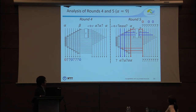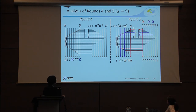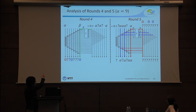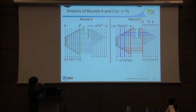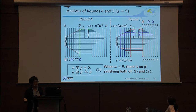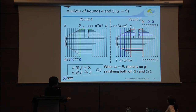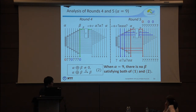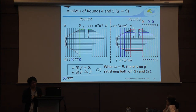Looking at round four: after the bit permutation, the zeros move accordingly. We focus on the right side. Now, we have 0 XOR beta, so the output difference of the S-box becomes beta and the input difference is alpha XOR beta. But when alpha = 9, there is no such beta satisfying: alpha maps to beta, and alpha XOR beta also maps to beta. Therefore, if alpha = 9, there is no valid beta, and this pair of input and output differences becomes an impossible differential.